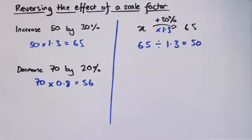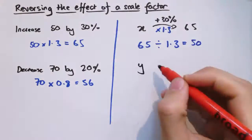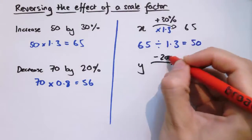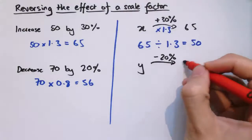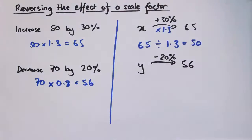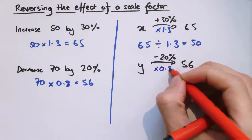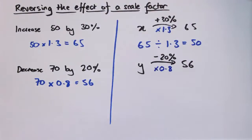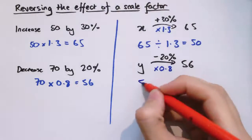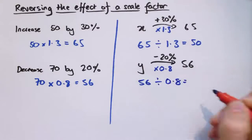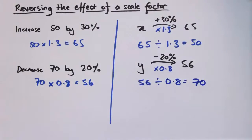Similarly, to undo the decrease example, the question could have said: I started with some value, there was a decrease of 20%, and we've ended up with 56. That would have been multiplying by 0.8. So to undo that, we just need to divide by 0.8. So 56 divided by 0.8 takes us back to 70.